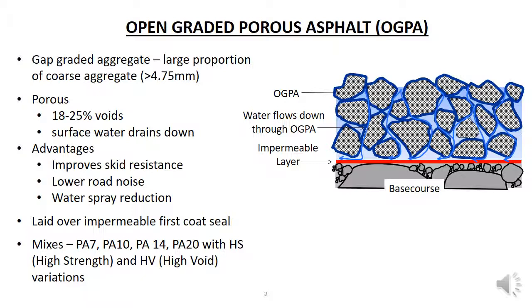This diagram shows how OGPA works. Some aggregate particles are shown apart, but remember that parts of the particles will be in contact to distribute the road loadings down to the base course. In effect we have two surfacings, fulfilling the dual functions of a road as a running surface and a waterproofing layer. The OGPA provides the running surface for the vehicles, while the seal beneath the OGPA provides the waterproofing.